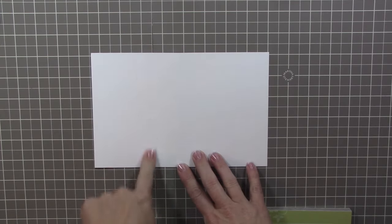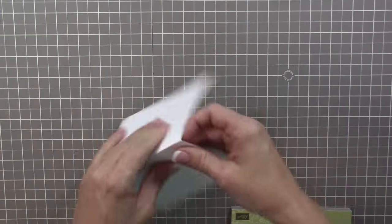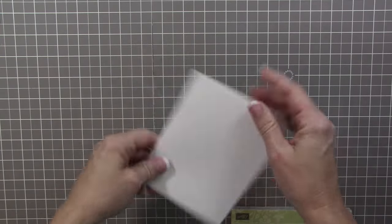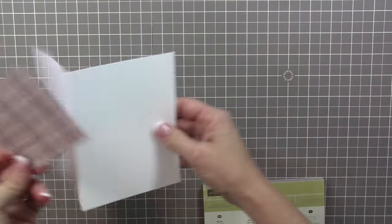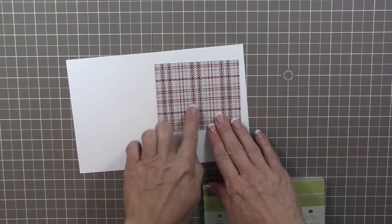I'm using a piece of thick whisper white cardstock and I've cut that down to an A2 size card, which is eight and a half by five and a half. I've scored it at four and a quarter and I'm going to use it in the portrait mode.